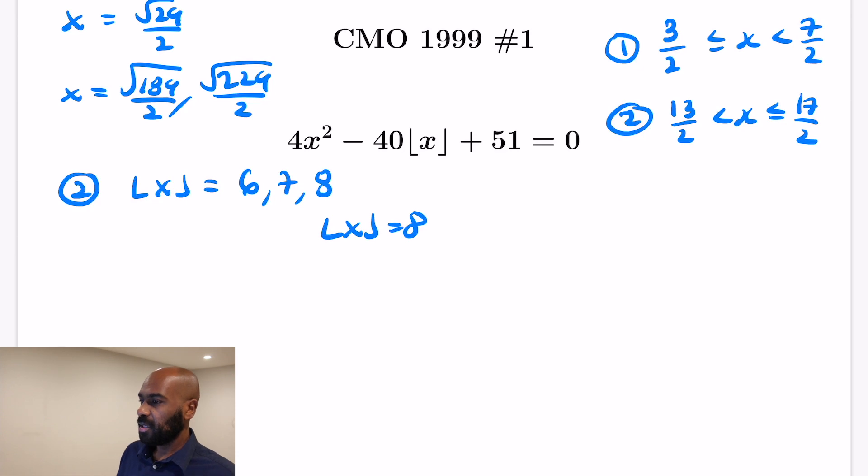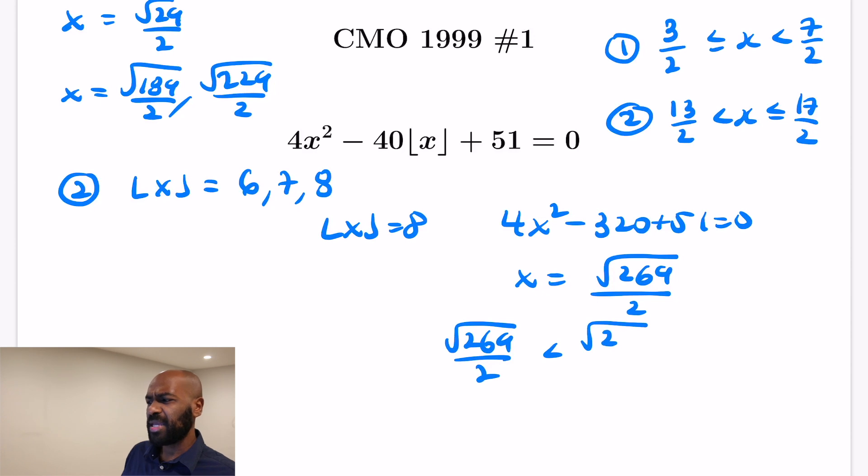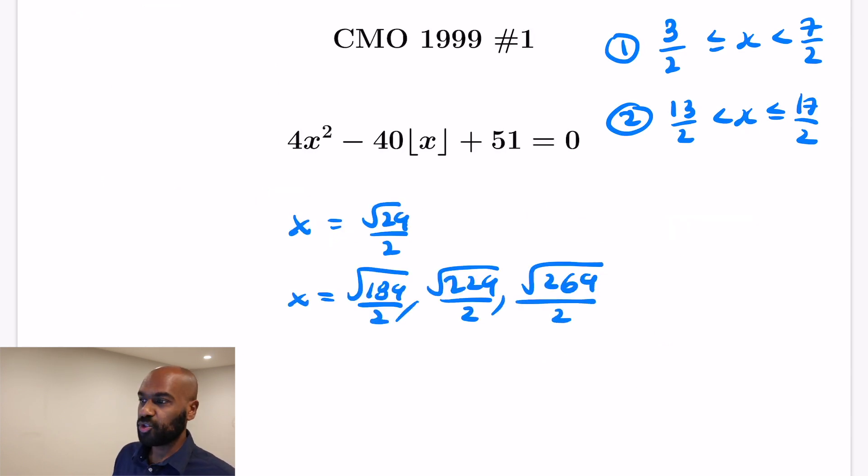And finally the floor of x is 8. So in that case, we get 4x² - 320 + 51 = 0. And so x² then in this situation is √269/2. And by the same thing that we did before, the square root of 269, the next perfect square after 269 is 289, that's 17². So 17/2 is the upper bound, and so the floor of this value, this number is just below 8.5, and so the floor of this value actually is 8. And so we do get one more solution that gives us these four solutions all together for this interesting quadratic equation.